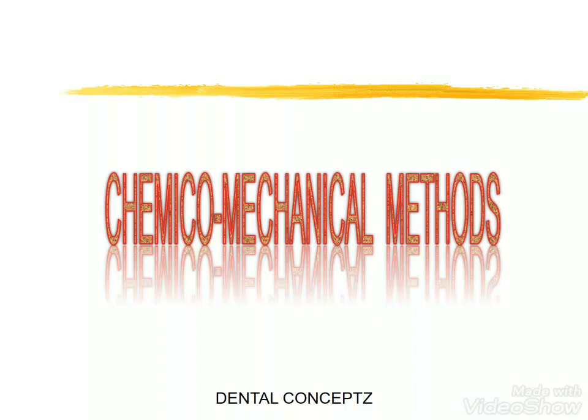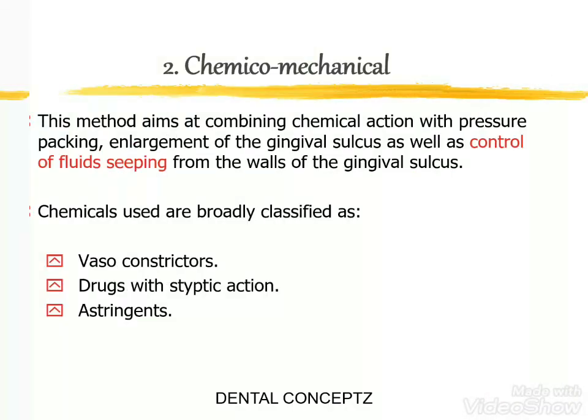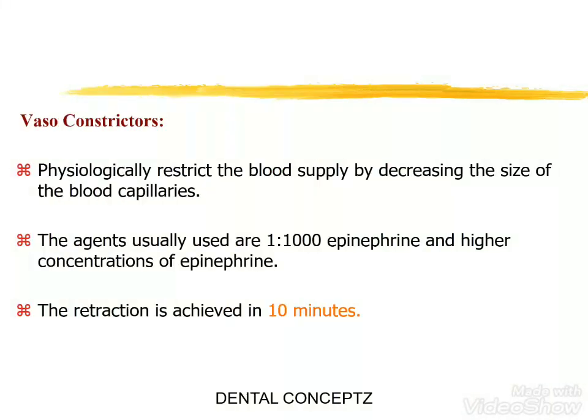Chemico-mechanical methods aim at combining chemical action with pressure packing, enlargement of the gingival sulcus, and control of fluids seeping from the walls of the gingival sulcus. The chemicals used are broadly classified as vasoconstrictors, drugs with styptic action, and astringents. Vasoconstrictors physiologically restrict the blood supply by decreasing the size of the blood capillaries. The agents usually used are 1:1000 epinephrine and higher concentrations of epinephrine.